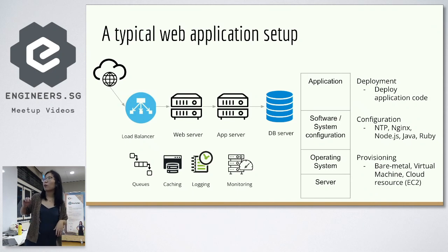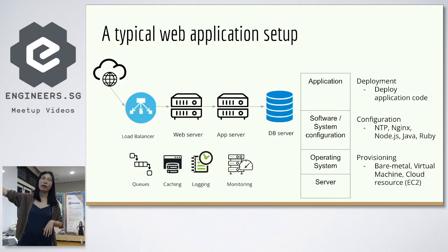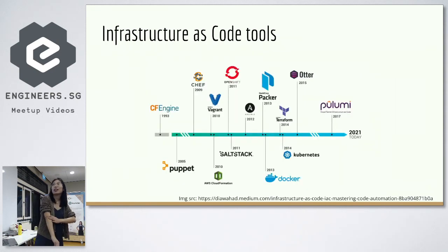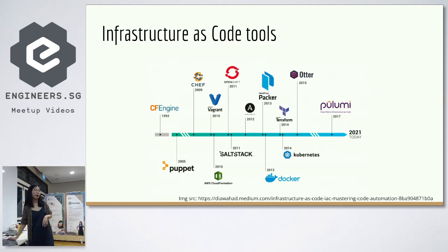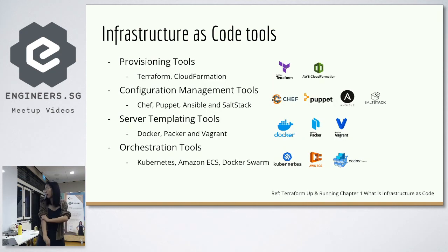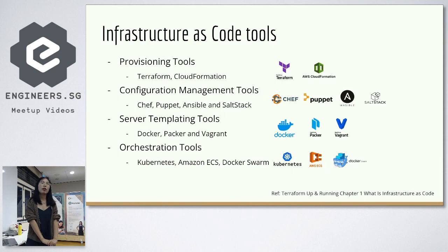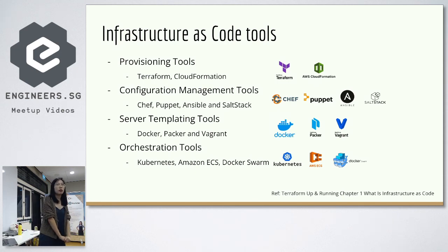For configuration management, we're mainly focusing on the configuration of software. These are the popular infrastructure IAC tools — you can see there's Terraform, CloudFormation, Docker, Kubernetes, and more. If you are new to all these tools you may be confused about what they're for. Here's how we can categorize them. For provisioning tools like Terraform and CloudFormation, they help you create cloud resources such as networking, compute instances, and storage in the cloud.